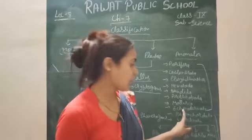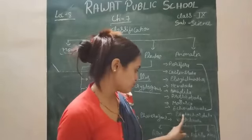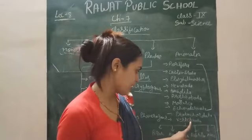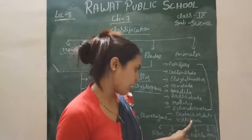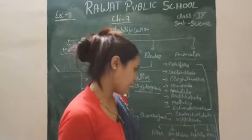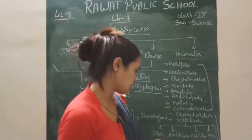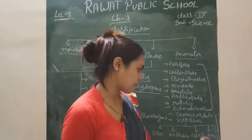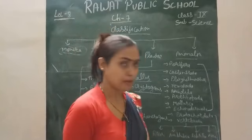Chordates are further divided into two categories: Protochordata and Vertebrata. Vertebrata have five classes: Pisces, Amphibia, Reptilia, Aves, and Mammalia.